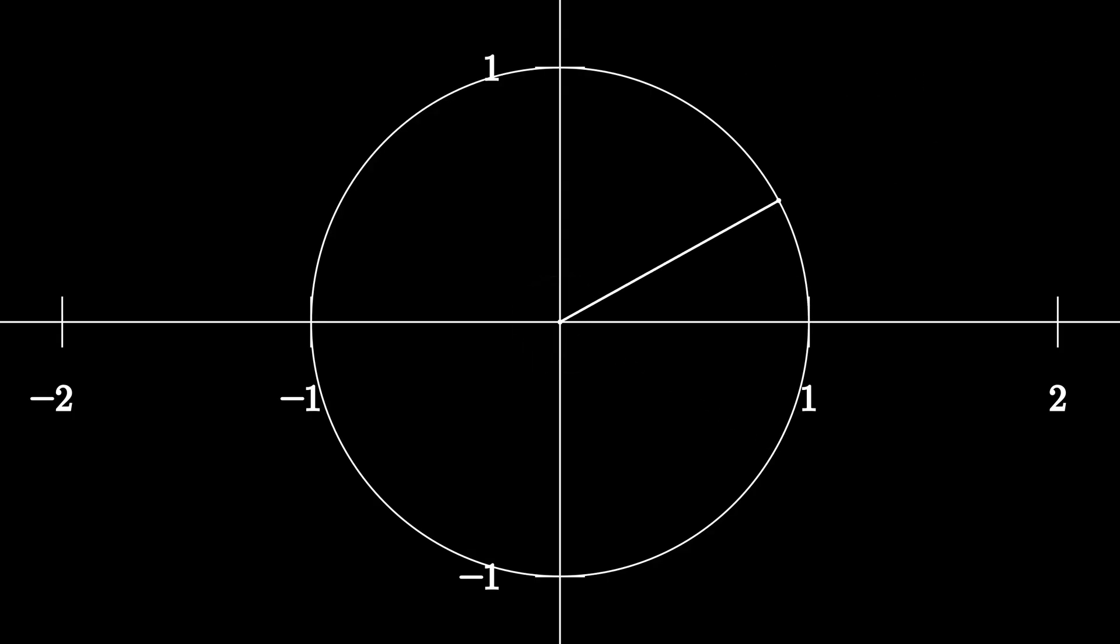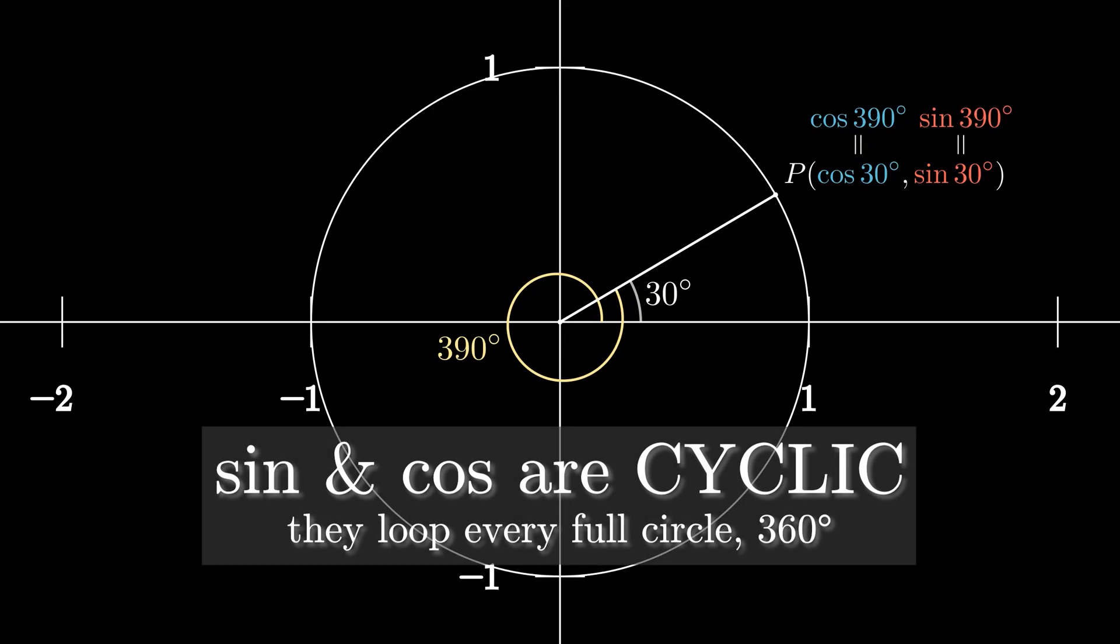For example, 30 degrees in first rotation and 390 degrees in second rotation are both in same location. That means sine 30 and cosine 30 are going to be exactly the same with sine 390 and cosine 390. Therefore, sine and cosine are cyclic. They loop every full circle, 360 degrees.